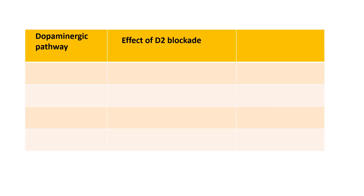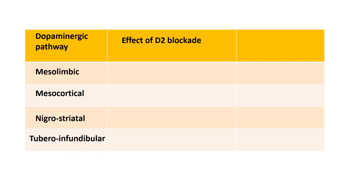A further understanding of how these drugs work depends on our understanding of the dopaminergic pathways in the brain. At a very basic level, there are four dopaminergic pathways: the mesolimbic, the mesocortical, the nigrostriatal, and the tuberoinfundibular pathways. When D2 receptors are blocked in the mesolimbic pathway, positive symptoms of schizophrenia are reduced.